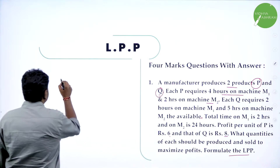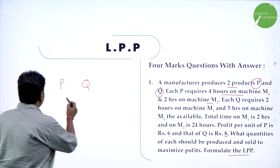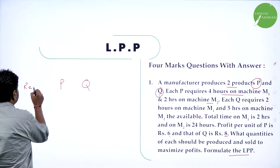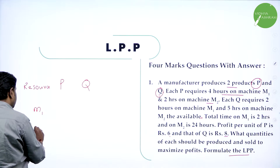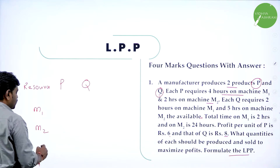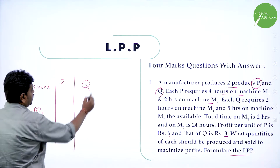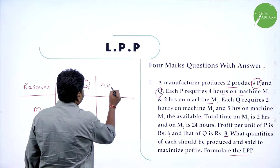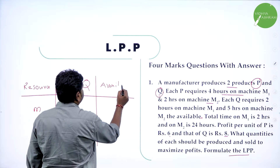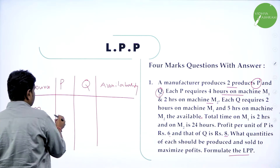Make two columns — one is P, the other one is Q. These are the types of products. And resources: to produce these, what resources are they using? The resources are machine M1 and machine M2. For each product, profit is given — sometimes it will be cost. Like this I will make a table, and add availability — how much maximum is available.